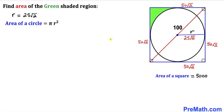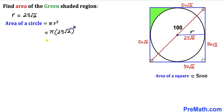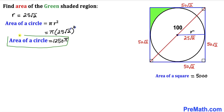Now let's calculate the area of this circle. The area formula is πr², where r = 25√2. Filling in: π × (25√2)² = π × 625 × 2 = 1250π. So the area of this circle turns out to be 1250π square units.